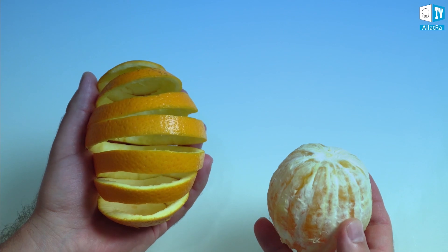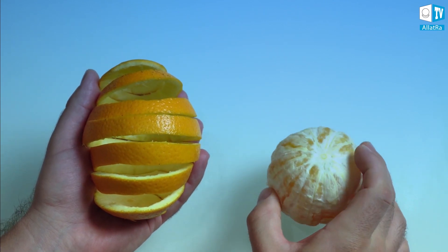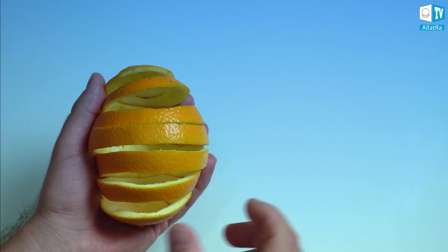If you separate this peel from the orange, then in the usual folded state it will be a spherical shape echoing contours of the orange. If stretched, it will be similar to a wave-like rope.